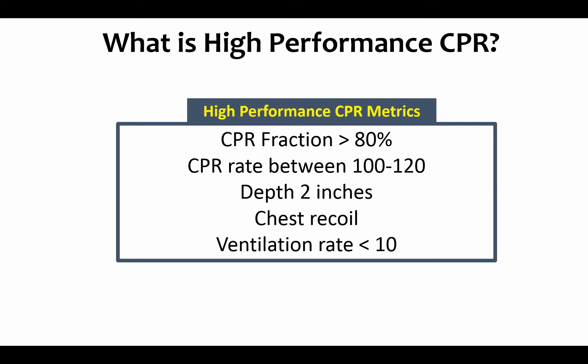So what is high performance CPR? High performance CPR has specific metrics we want to achieve: a CPR fraction — the percentage of time that hands are on the chest — greater than 80%, a CPR rate between 100 and 120, a compression depth of two inches, adequate chest recoil, and a ventilation rate of less than 10 per minute.